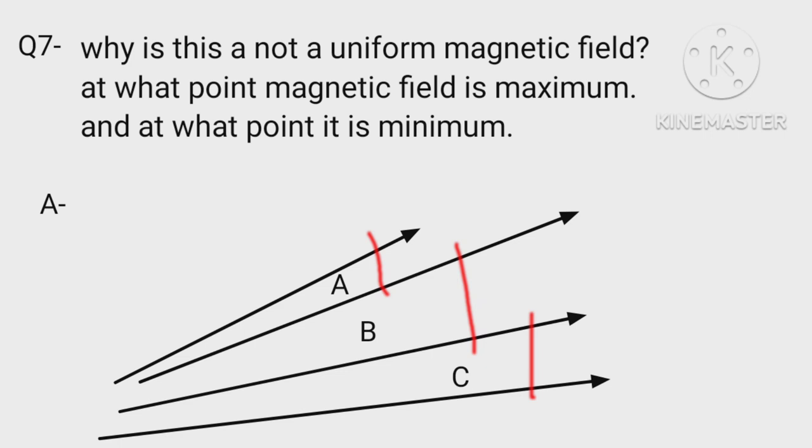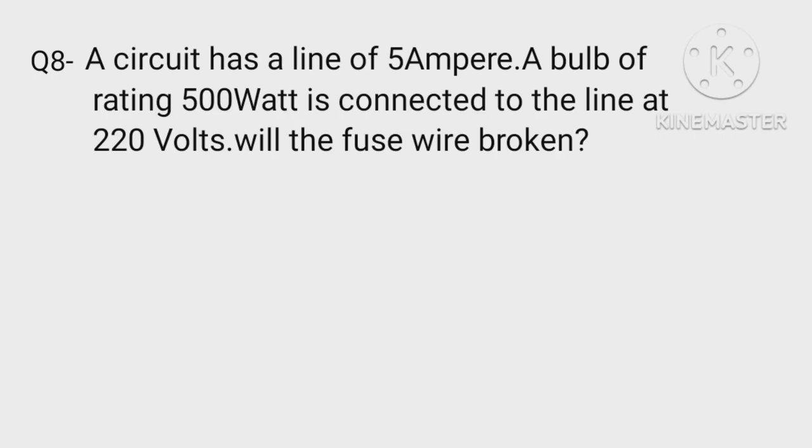A circuit has a line of 5 ampere. A bulb of rating 500 watt is connected to the line at 220 volts. Will the fuse wire be broken? P equals 500 watt, V equals 220 volt. As I equals P divided by V equals 500 divided by 220, less than 5A, hence fuse wire will not be broken.